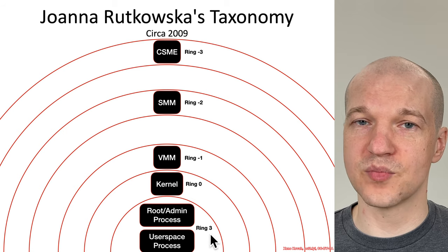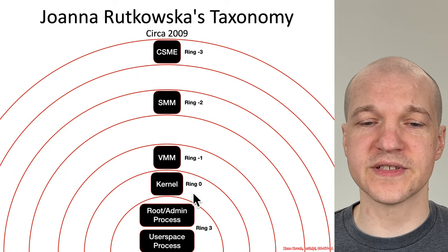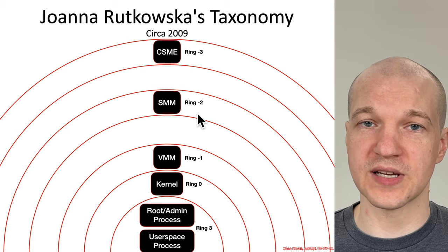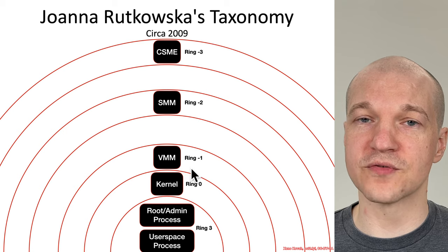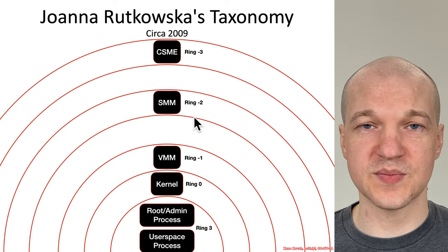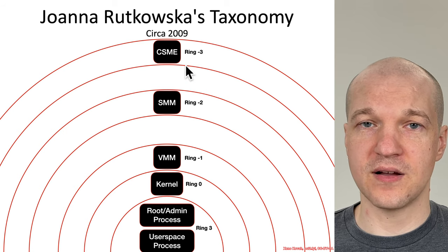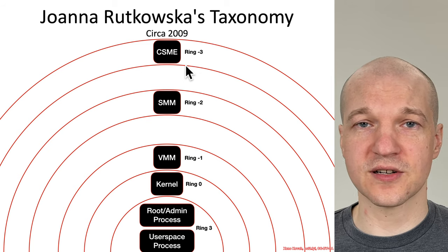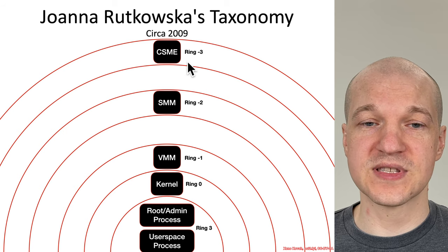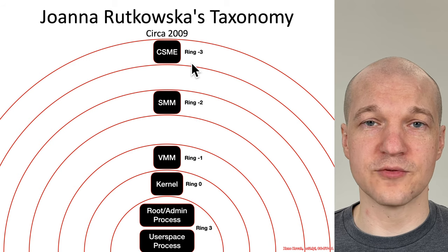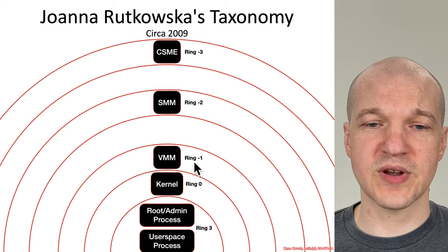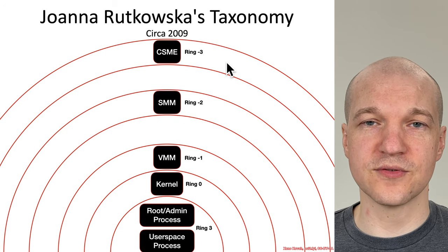Intel's convention was that higher ring numbers were less privileged and lower ring numbers were more privileged, so ring negative one must be more privileged than ring zero. Later on, the team found attacks on system management mode, which they termed ring negative two, because they found it was actually even more powerful than virtualization software — it had full control over all of memory, including the VMM's memory, and could not be directly inspected by the VMM. Also in 2009, they ultimately found an attack on the Intel management engine, later called the Converged Security and Management Engine, also known as Active Management Technology. At the time, that particular location ran on a processor with full memory access, so it could inspect the otherwise uninspectable memory of system management mode. These terms ring negative one, ring negative two, and ring negative three came into existence, referring to ever deeper and more privileged code.